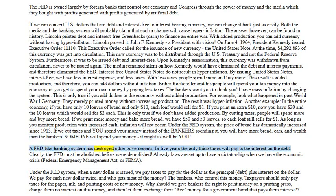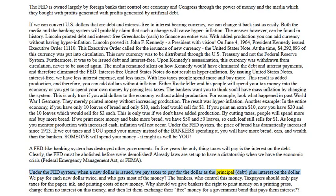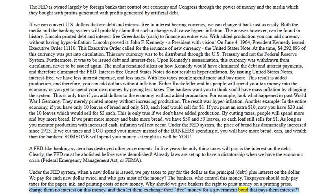A Fed-like banking system has destroyed other governments in five years. The only thing taxes will pay is the interest on the debt — clearly the Fed must be abolished before we're demolished. Already, laws are set up to have a dictatorship when we have the economic crisis — Federal Emergency Management Act, or FEMA. Under the Fed system, when a new dollar is issued, we pay taxes to pay for the dollar as the principal debt plus interest. We pay for each new dollar twice. Taxpayers should only pay taxes for the paper, ink, and printing costs of new money.